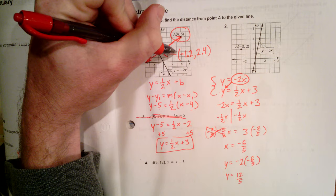So I plug it in. I'll plug it into the first equation. Y equals negative 2 times negative 6 over 5. And that would be y is equal to positive 12 fifths.